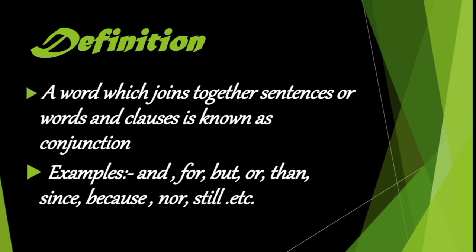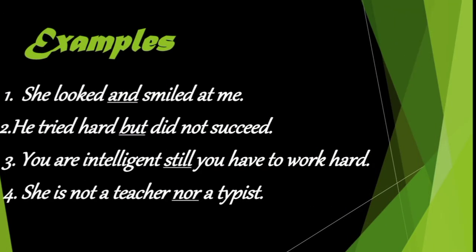Let us see some examples. First: 'She looked and smiled at me' — here the word 'and' is the conjunction joining two sentences. Second: 'He tried hard but did not succeed.' Third: 'You are intelligent, still you have to work hard.' Fourth: 'She is not a teacher nor a typist.' Here the words but, still, nor, and are examples of conjunctions.